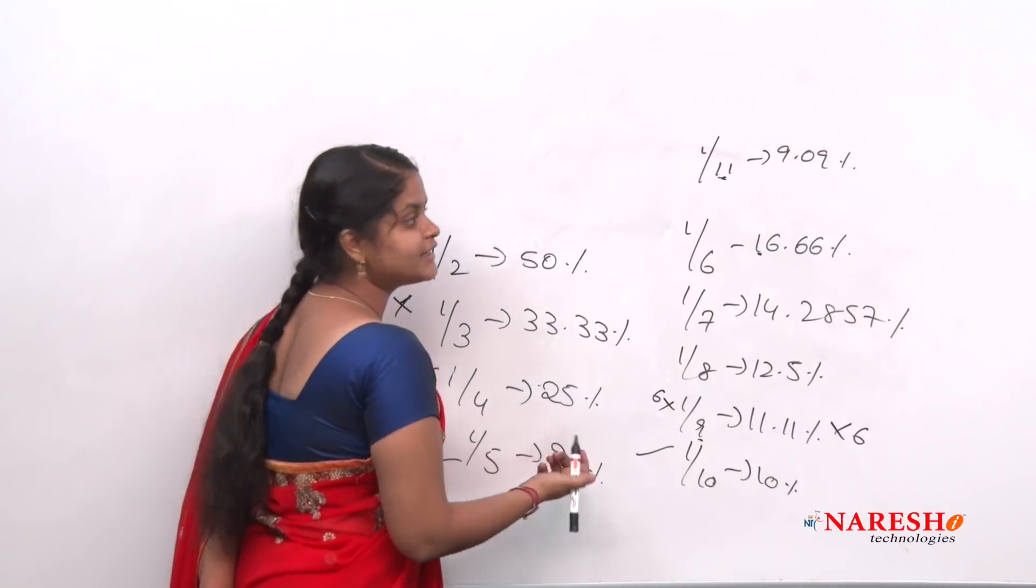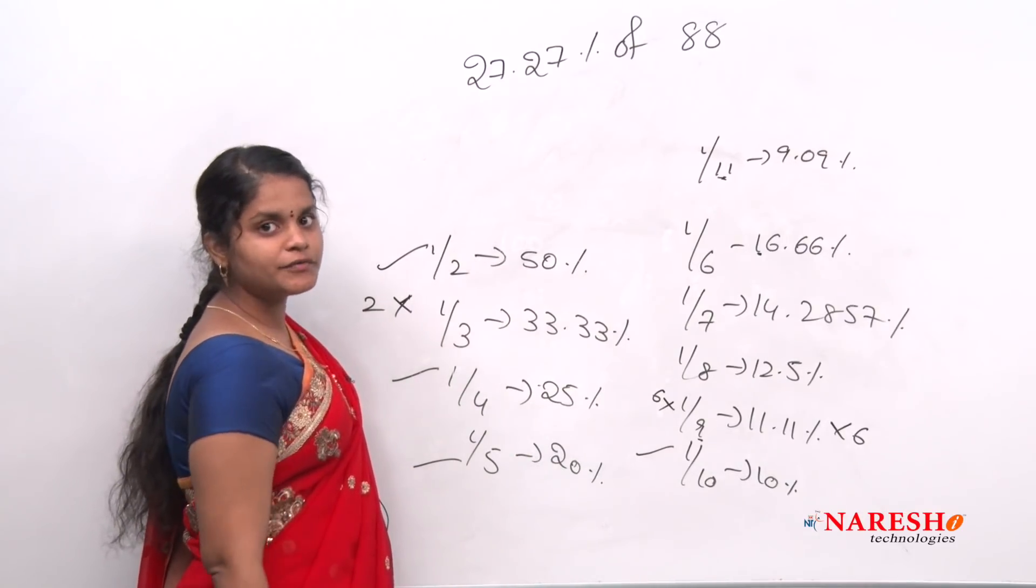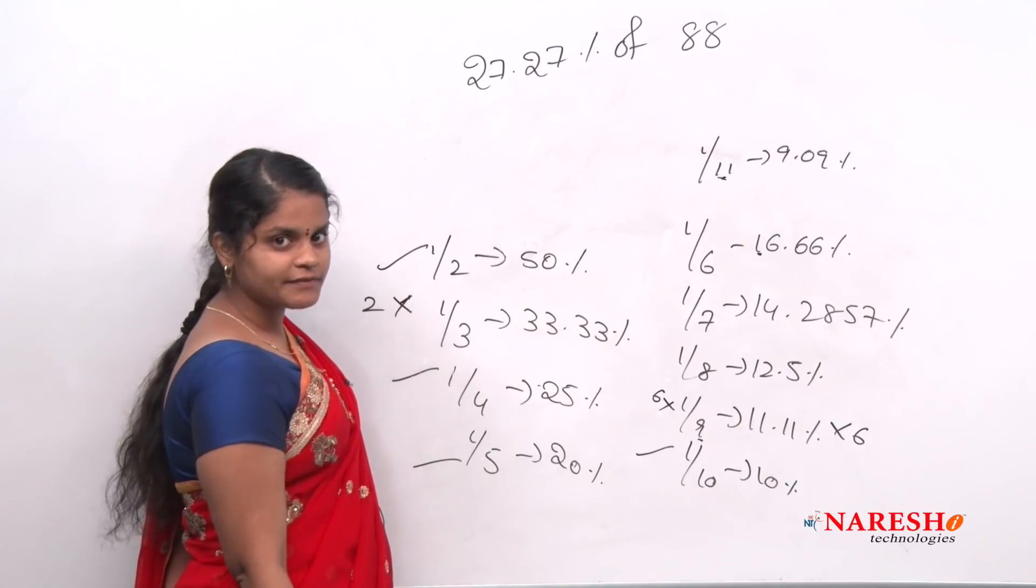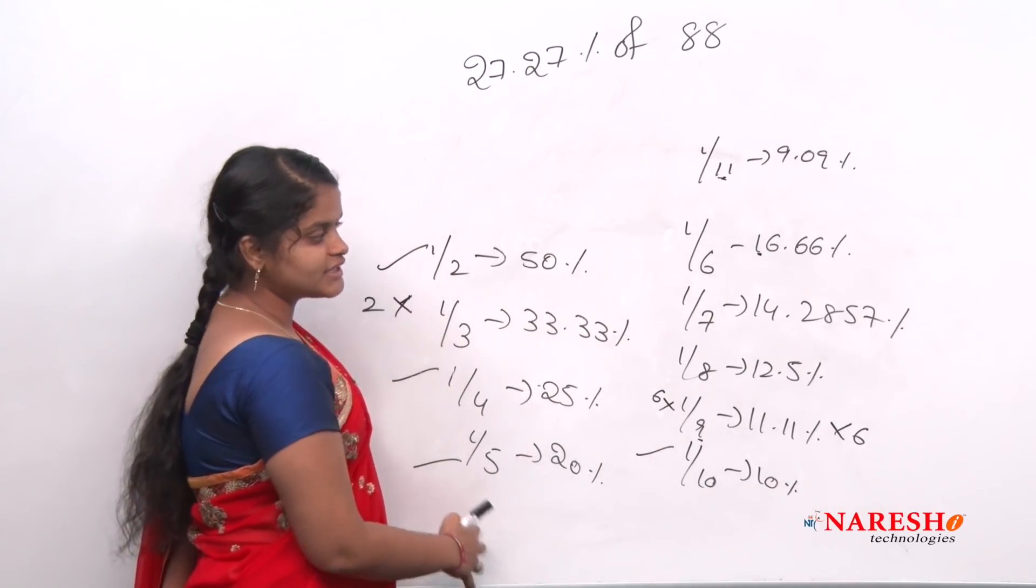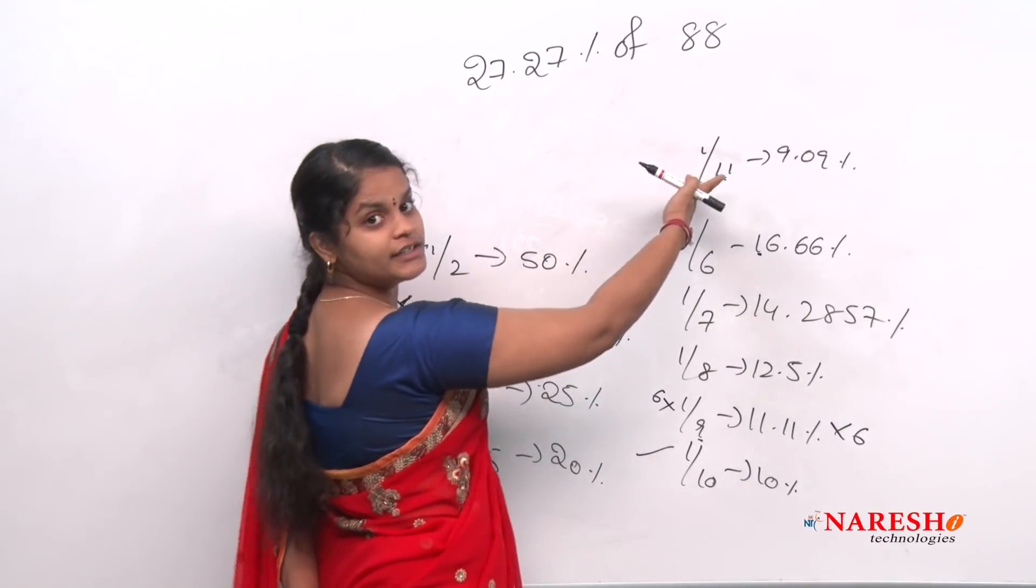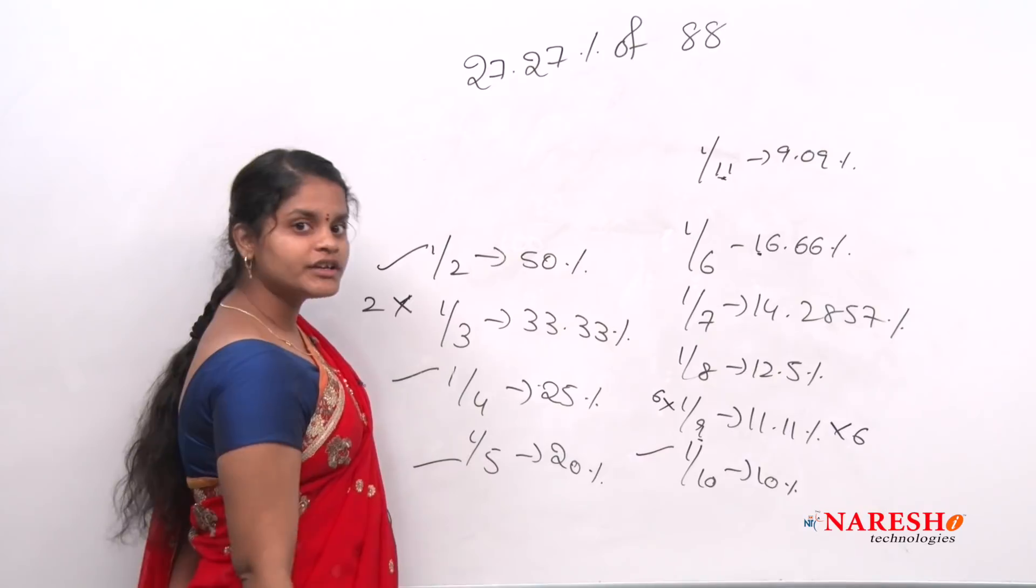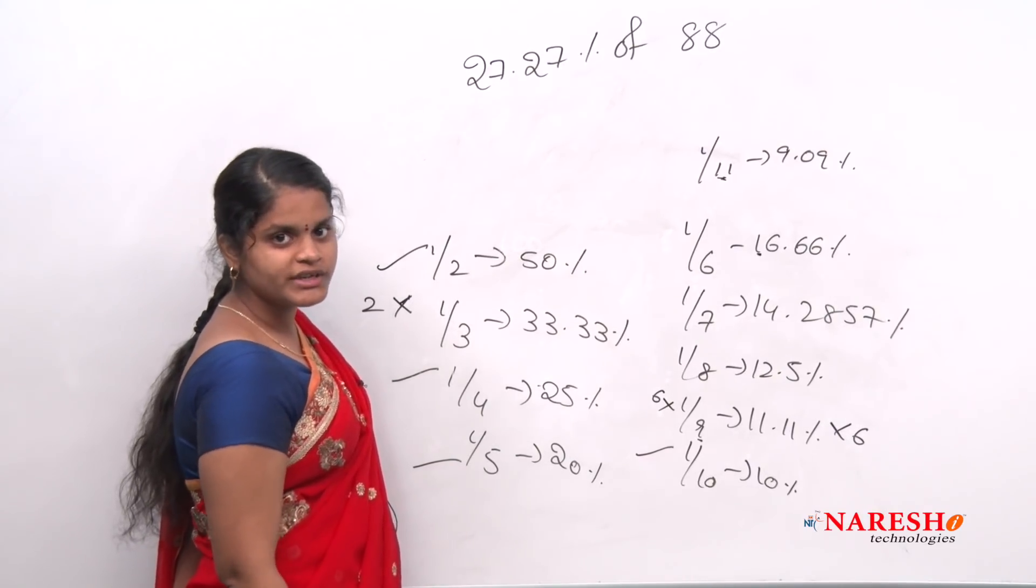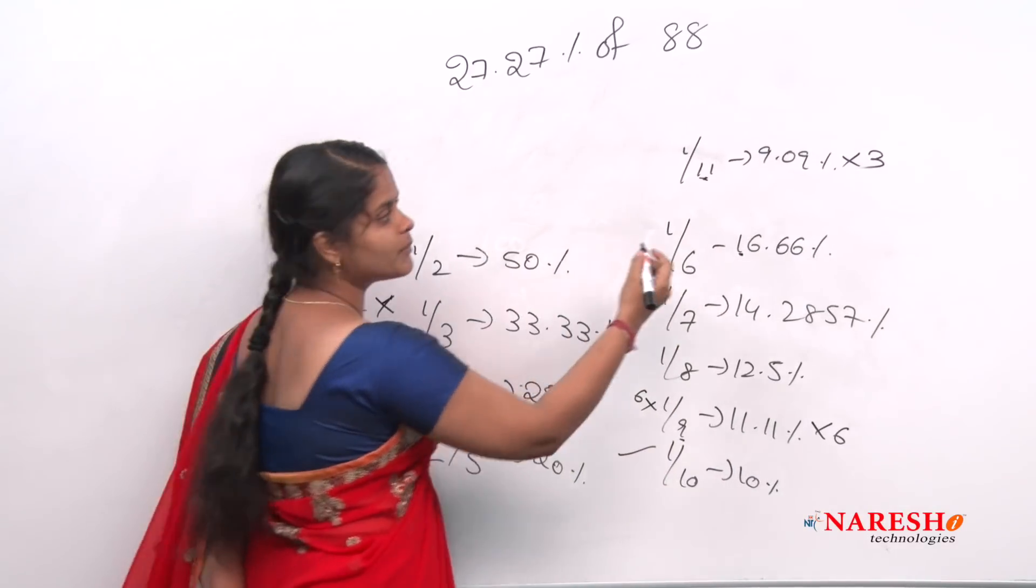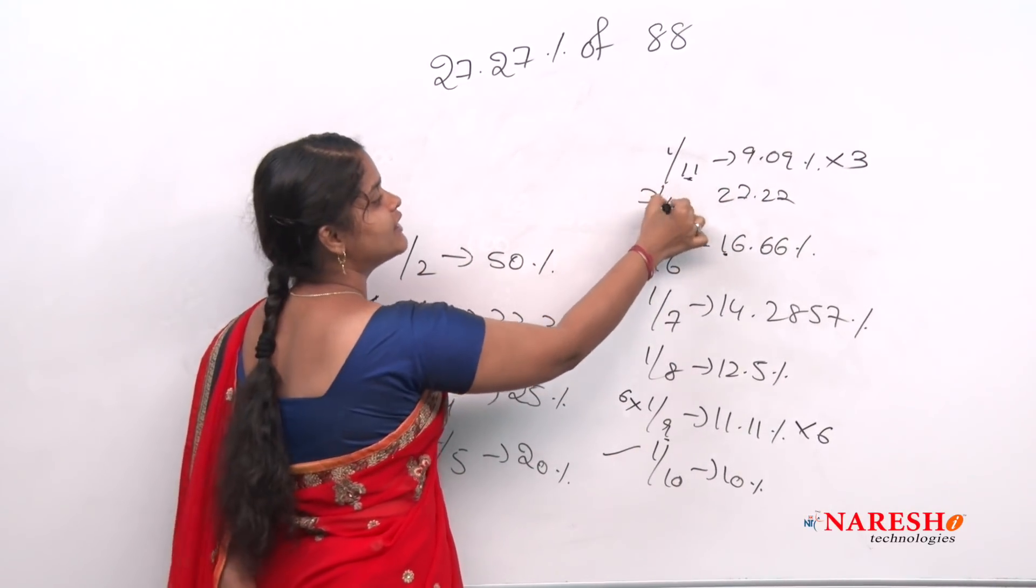For example, there is a question like 27.27 percentage of 88. I am supposed to find 27.27 percentage of 88. By using of this, how can I find? See, observe carefully. See here, it is 9.09, 27. How can you get 27? One thing you should do is 9 into 3. So I just check, 9 into 3. So how much it is? 27.27 means the value is 3/11, right?